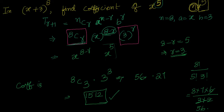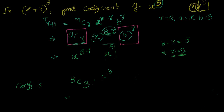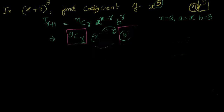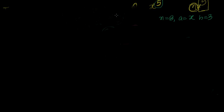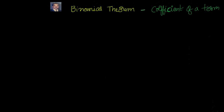Let's do one more example. In the next video we will go to the term independent of x. For now, let's do another example. The binomial is: a minus 2b, whole to the power of 12.